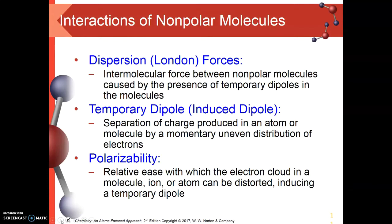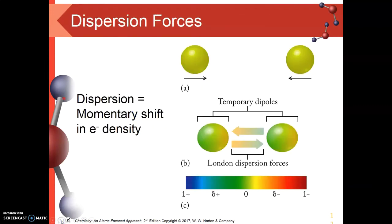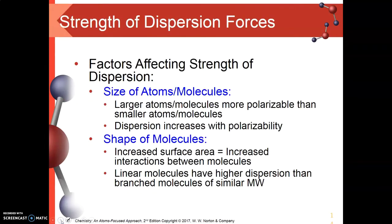The property associated with the strength of these London forces is polarizability — that is, how easy is it for electrons to get that distortion, to get to that point where we have uneven distributions on the molecule itself? The answer comes in one of two forms. We think of polarizability either in terms of size, where larger atoms and larger molecules have more electrons available, giving a larger ability to distort that electron cloud and get more dispersion; or by shape, where increased surface area allows molecules to get closer to each other, giving more interactions.